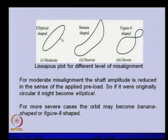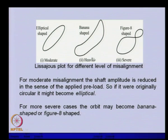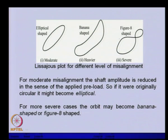This is the Lissajous plot for different levels of misalignment. For moderate misalignment, the orbit has an elliptical shape. For heavier misalignment, a banana shape is observed. For very severe misalignment, a figure-of-eight or multiple loops may appear. By looking at these plots we can pinpoint whether the rotor system has some kind of misalignment and identify the degree of misalignment.